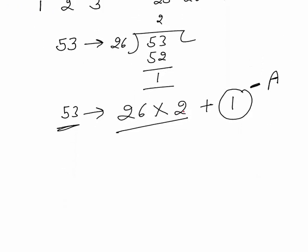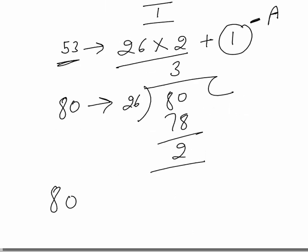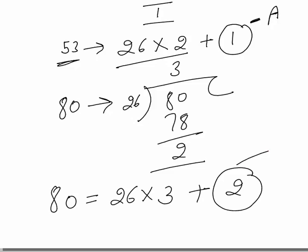Similarly, if you want to find what 80 represents: divide 80 by 26. That gives 26 times 3, which is 78, with a remainder of 2. So 80 equals 26 series completed 3 times plus 2. Since 2 means B, the number 80 represents the alphabet B. You can represent any number with its corresponding alphabet using this division method.